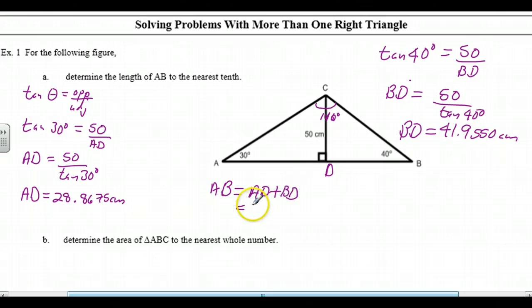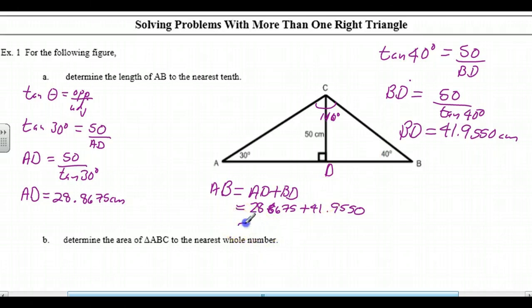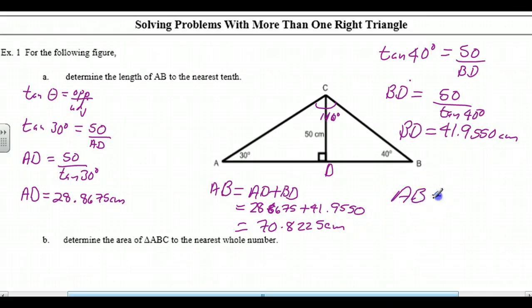AB is 28.8675 plus 41.9550. At this point, you'll note this diagram really isn't to scale, which is fine, because most of the time our diagrams are simply placeholders for information. The more accurately they're drawn the better, but it just doesn't always happen that way. They hold the information, and we can do this. So this is 70.8225 centimeters, but our final answer is that AB is equal to 70.8 centimeters.